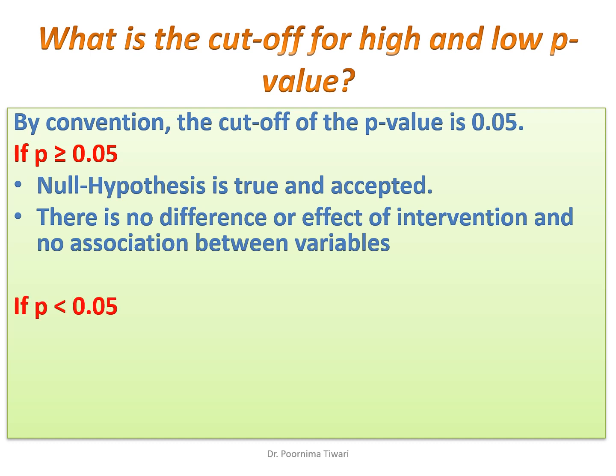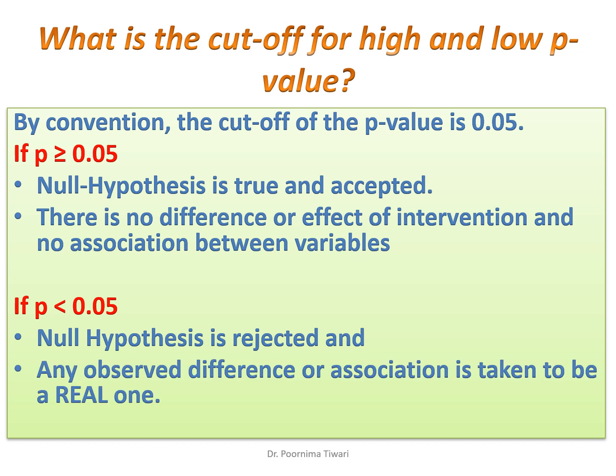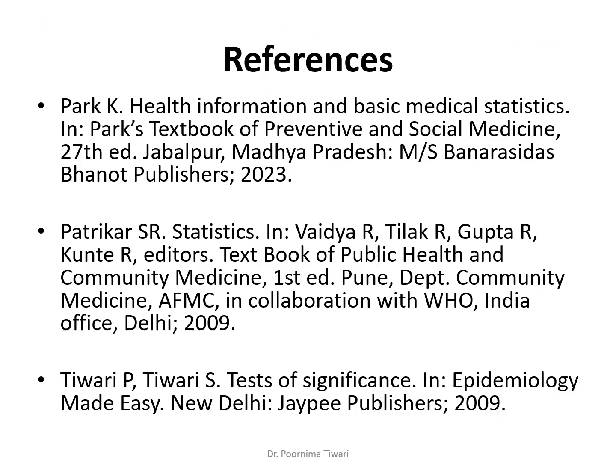But if the p-value comes out to be less than 0.05, we say that the null hypothesis is rejected and that any observed difference or association is taken to be a real one. How we arrive at the p-value will be covered in the next lecture.